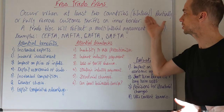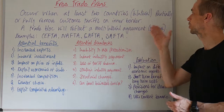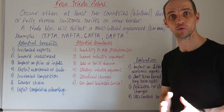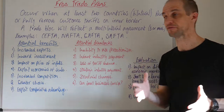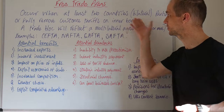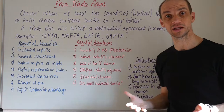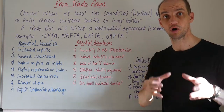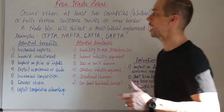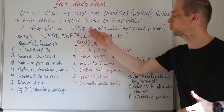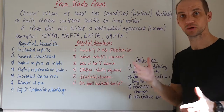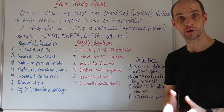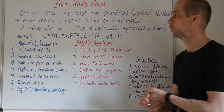Free trade areas occur when at least two countries in a bilateral agreement partially or fully remove tariffs on their inner border. They may have very different external policies — they may have fairly similar external policies — but they won't have a common external policy. Now a trade block will reflect a multilateral agreement, where of course we've got three or more countries being involved.